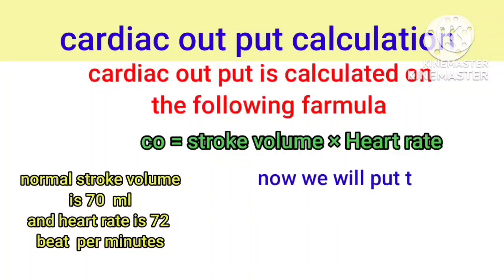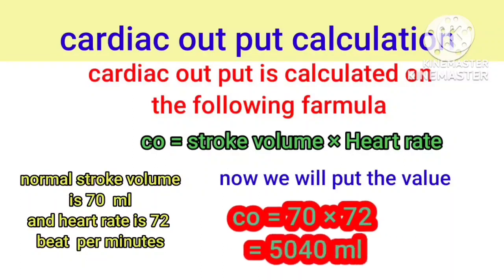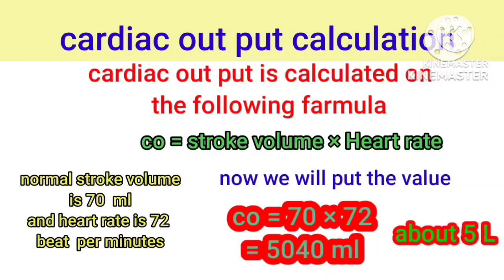Now we will put the value. Cardiac output equals 70 multiplied by 72. The net value will come out 5040 ml. It means the cardiac output is about 5 liters per minute.